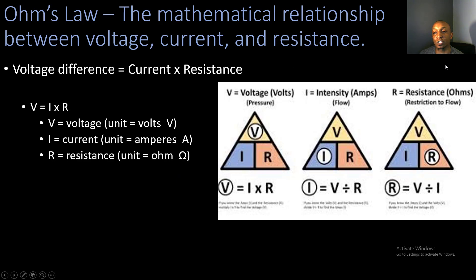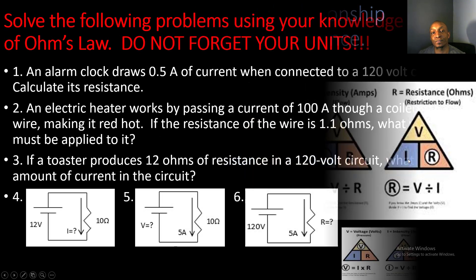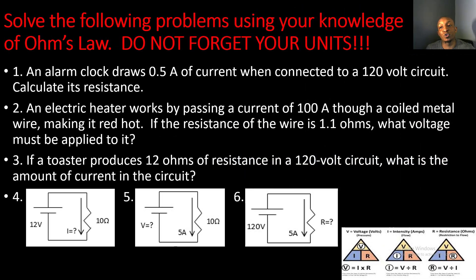Here's our voltage triangle, which helps you calculate voltage. To solve for voltage, put your finger over V, and you have I × R. To solve for current, put your finger over I, which gives V ÷ R. To solve for resistance, put your finger over R, which gives V ÷ I.